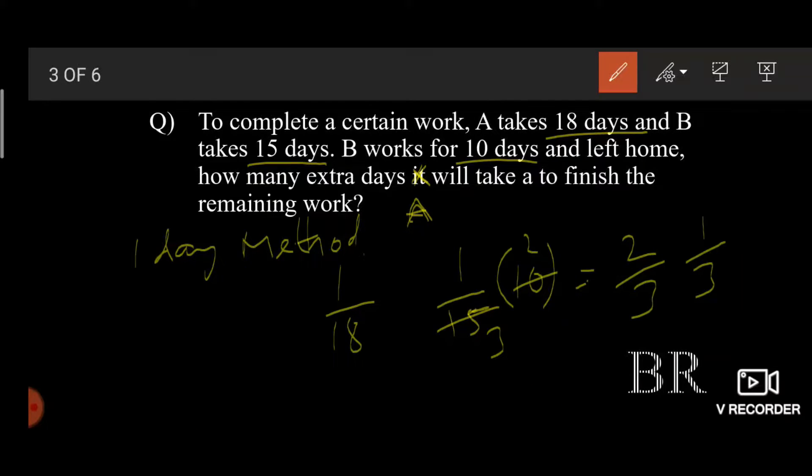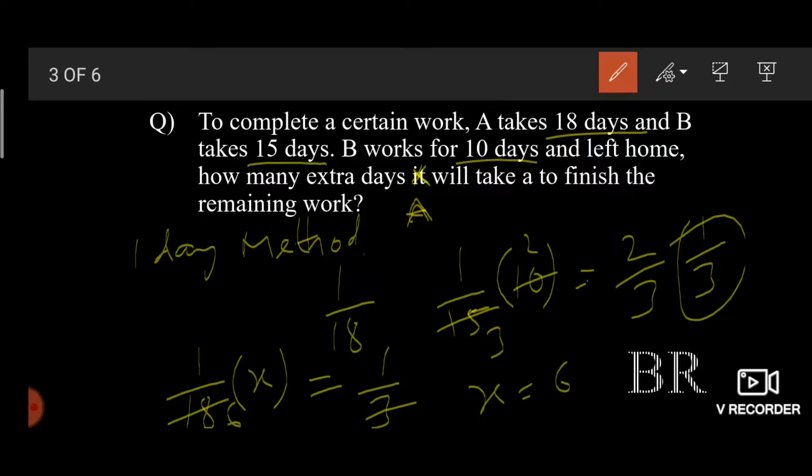So B's 1 day work is 1 by 15 and he worked for 10 days. Hence B finished 2 thirds of the work and remaining work is 1 third. And the question is how many extra days will A take to complete 1 third of the entire work? So A's 1 day work is 1 by 18 into X days. By solving this, we get X is equal to 6 days. That means A takes extra 6 days to finish the remaining work, which is 1 third of the work.